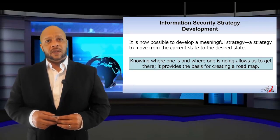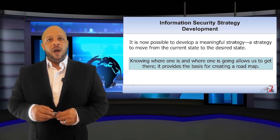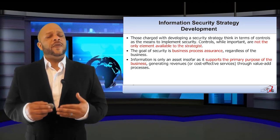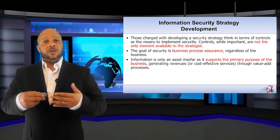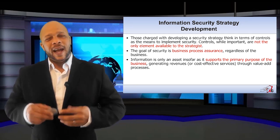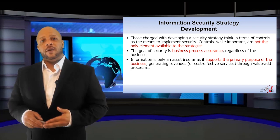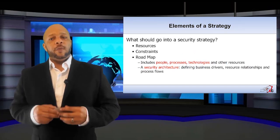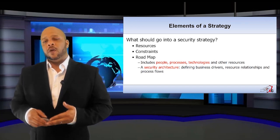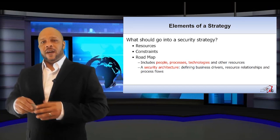Now, with the third piece of the puzzle in place, the picture at this point should be much clearer. Knowing where you are allows you to know how to get where you need to go. As we develop our strategy, it's important to keep in mind the goal of security is business process assurance. The information is only an asset to the organization if it supports the primary purpose of the business for generating revenue. Some core elements of the strategy that need to be identified are those resources and constraints that we have to build the overall strategy, and what is the roadmap — how are we planning to get to our desired state.